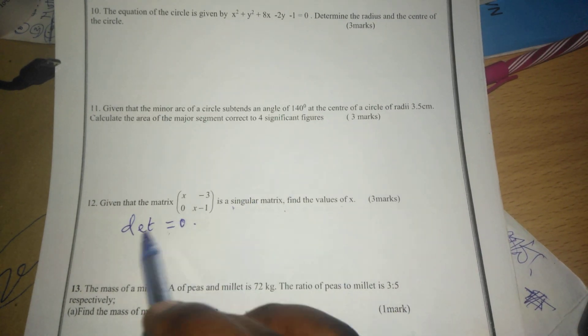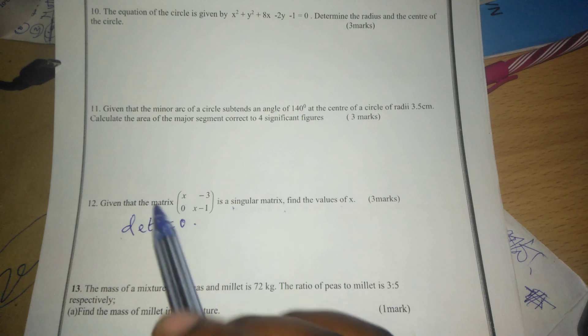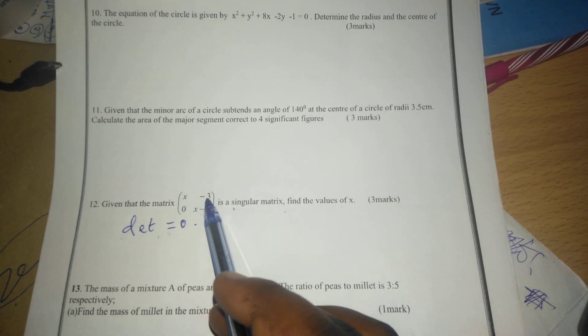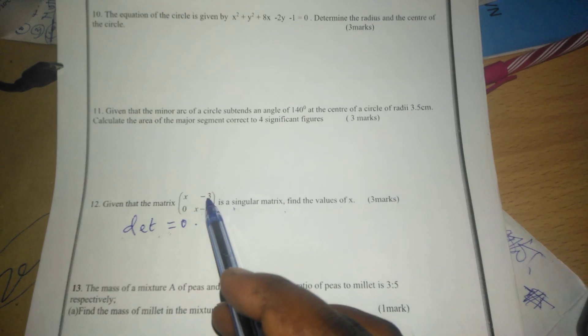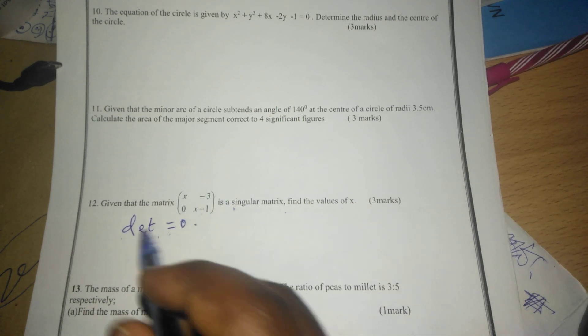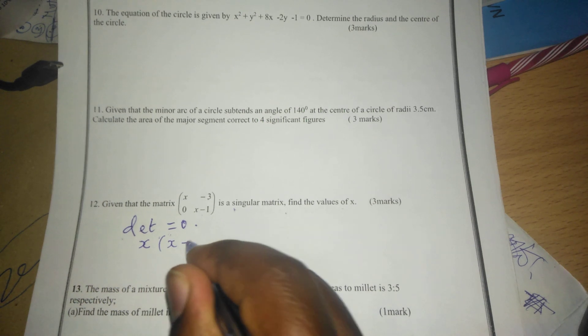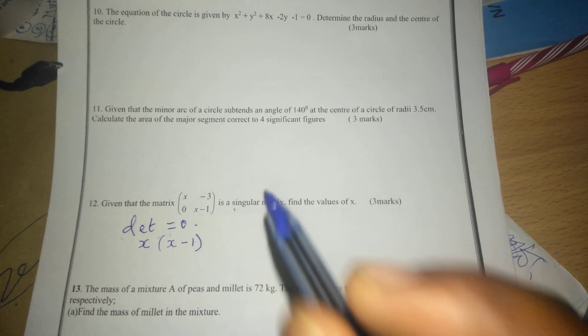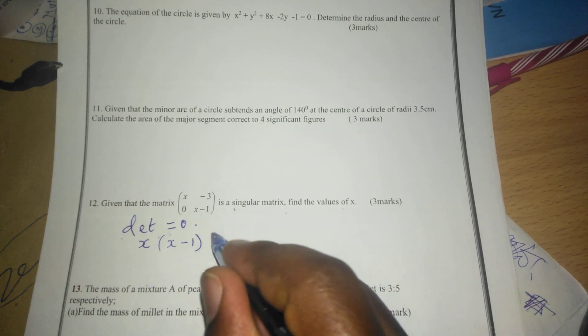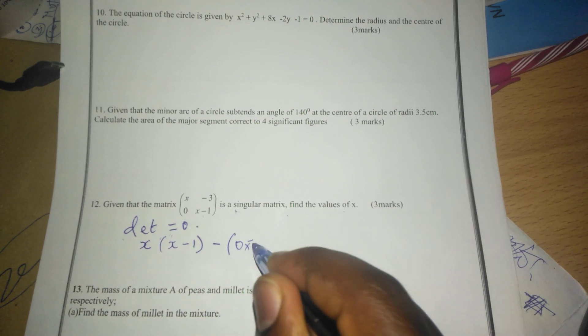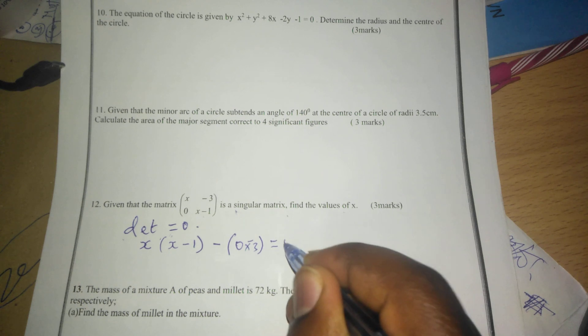So we should know how a determinant is calculated. We multiply the leading diagonal elements and subtract the product of the other elements in the other diagonal. In the leading diagonal, we will have x multiplied by x minus 1. Then when we subtract 0 by negative 3, we should obtain a 0.